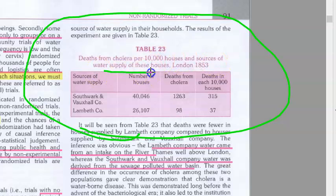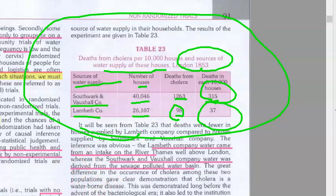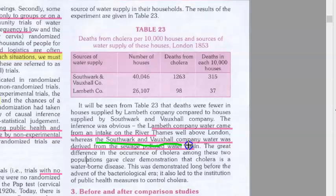There is a table showing deaths from cholera per 10,000 houses by source of water supply in London, 1853. The Southwark and Vauxhall Company supplied 40,000 houses with 1,263 deaths — 315 deaths per 10,000 houses. The Lambeth Company supplied 26,000 houses with only 98 deaths — 37 per 10,000 houses. Deaths were fewer in houses supplied by Lambeth Co., while those supplied by Southwark and Vauxhall had more deaths because their water came from a sewage-polluted water basin.